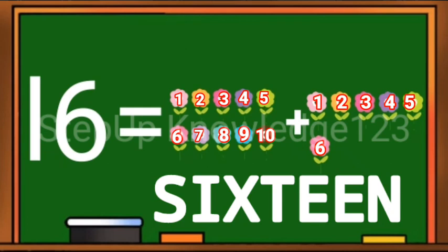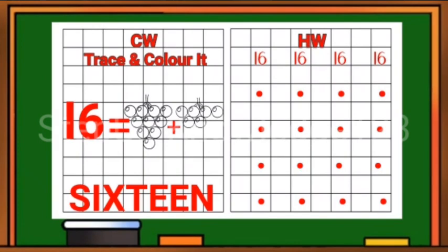So kids, that's it for today. Now, a word for you. Trace the number 16. Count the number of grapes and color it, and then write number 16 where the dots are given.